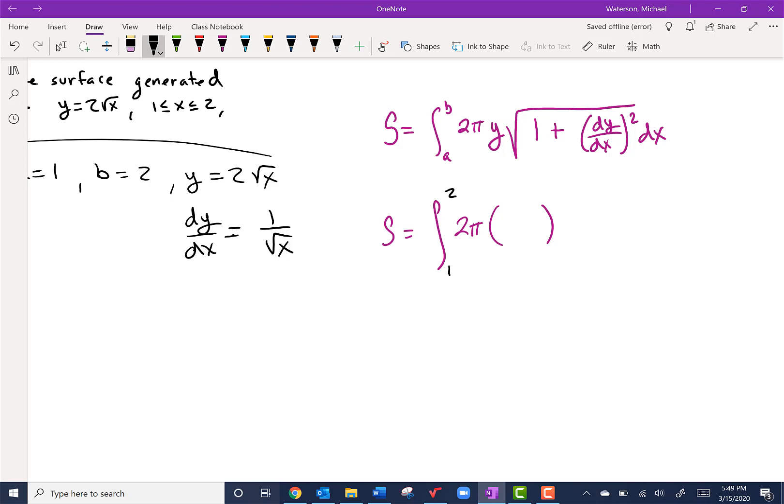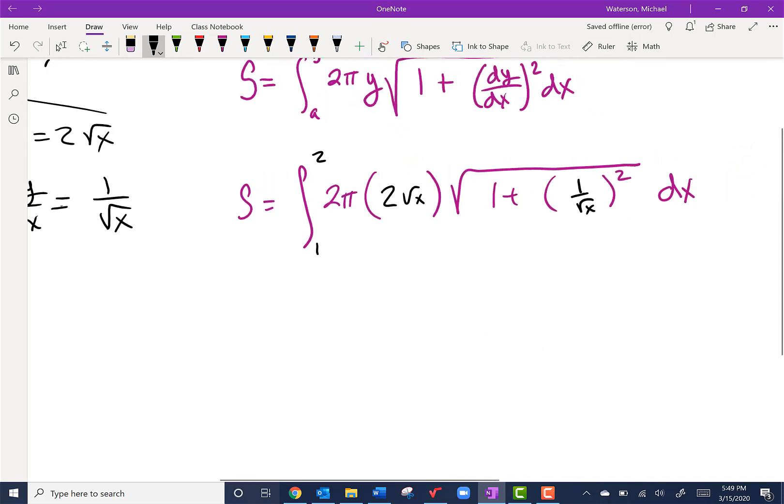Now we multiply it by the square root of 1 plus our derivative dy/dx, all squared. And that's just (1/√x)². Cool, well, let's clean this up.